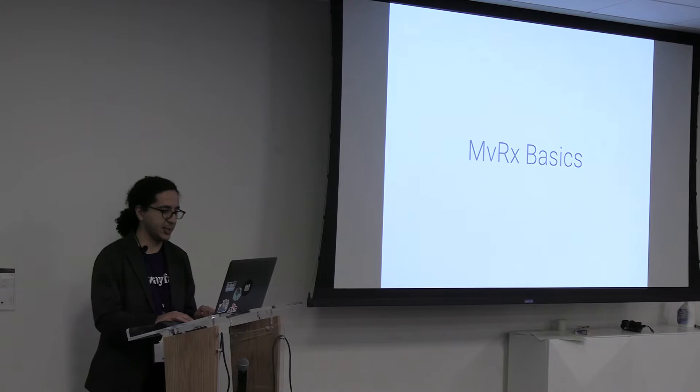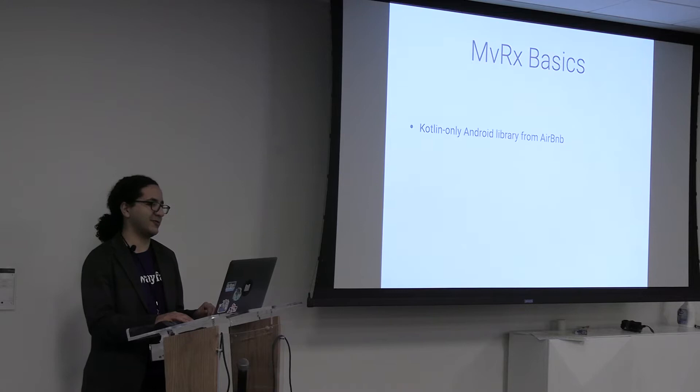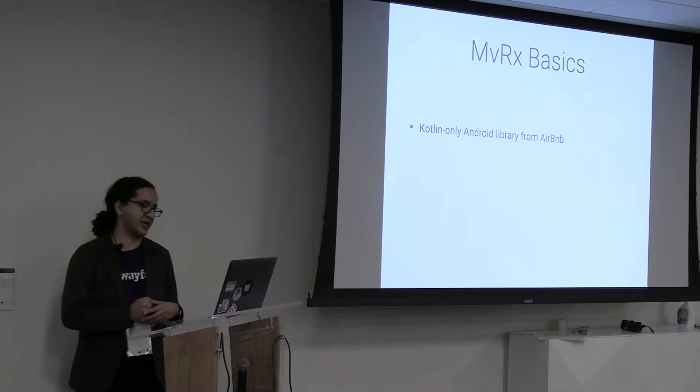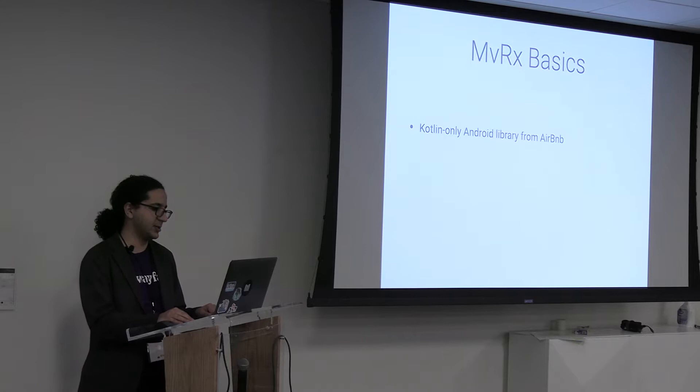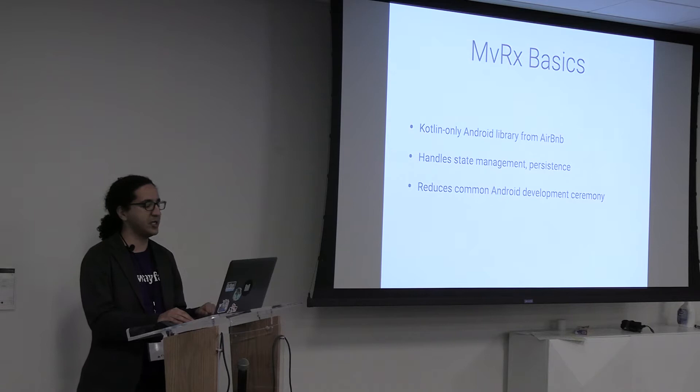So what is Mavericks? By the way, that's how they wanted to pronounce it — not NBRX, it's Mavericks. It's a library for developing Android apps. It's Kotlin-only, so you can't use Java with it. And it was invented by the fine folks at Airbnb. It takes care of a lot of things like state management, persistence — really just any annoying thing that happens in Android development, at least at the UI layer, Mavericks will help you out with.